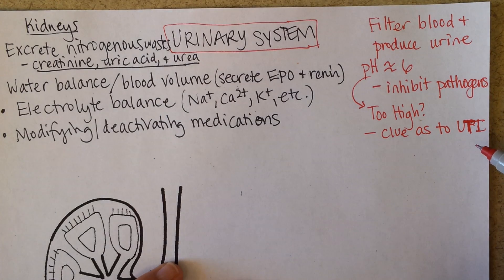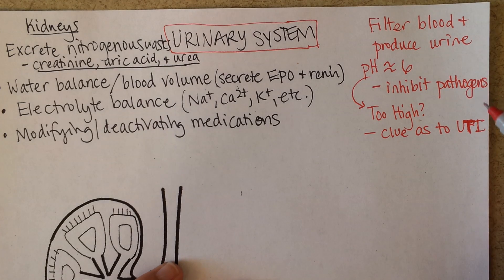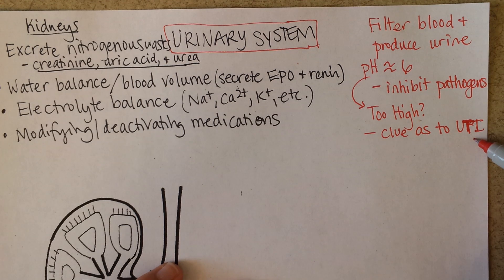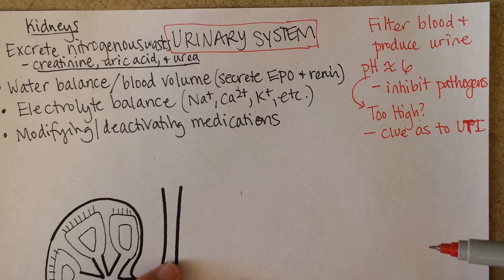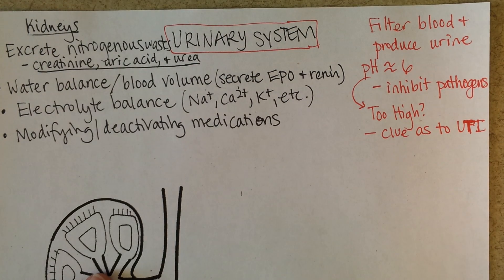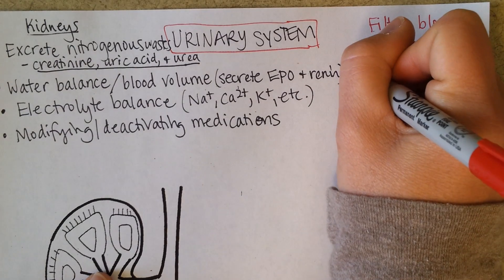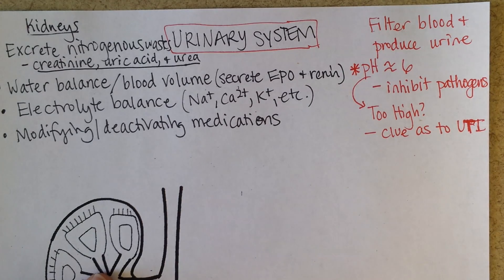Which comes first, the chicken or the egg? Was the urine too alkaline, and so pathogens could grow? Or, if pathogens begin growing in the urinary tract, they actually secrete products that make the pH more basic. So it can be a negative cycle where UTI causes the urine to become more and more alkaline. That's one key idea — the acidic nature of urine.